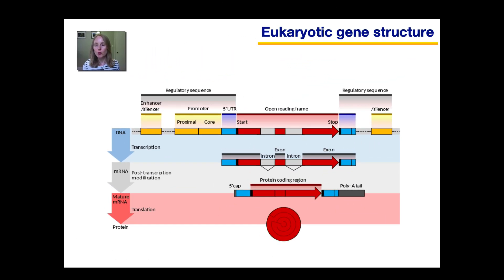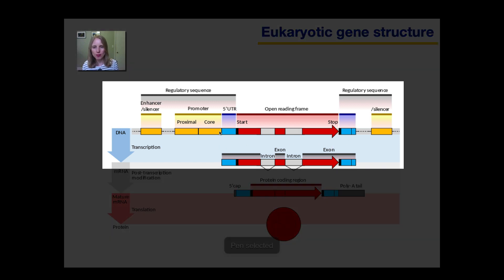First, we need to review eukaryotic gene structure. This diagram is a little more complicated than I'd ideally like because it shows the process from DNA to RNA to protein, and I just want to focus on the gene structure. This part of the DNA — from here up to here — is the gene. This entire region gets transcribed into RNA, and you can see the equivalent of the DNA segment here in the RNA.